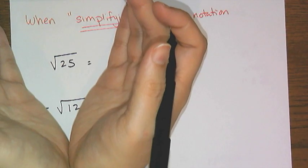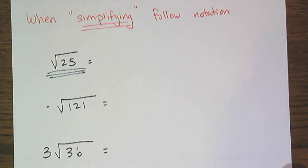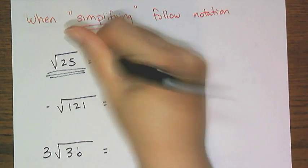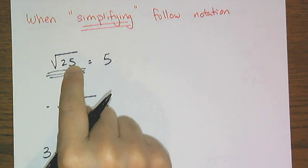And so you have to follow what is written. If I see this, square root of 25, my answer is not plus or minus 5. It's just 5, because this notation tells me I want the principal or positive root.